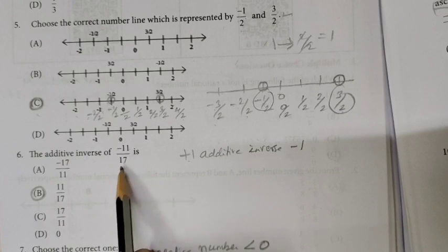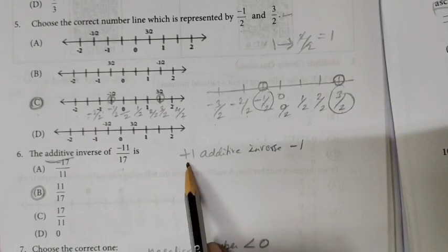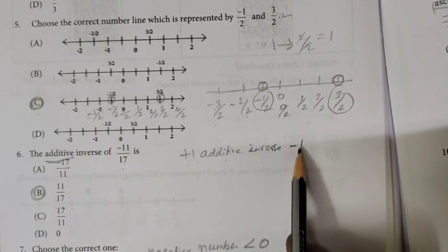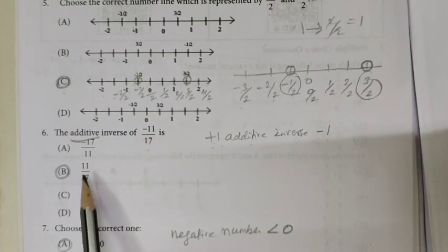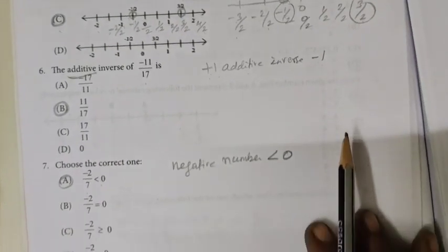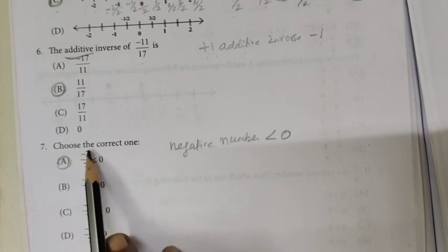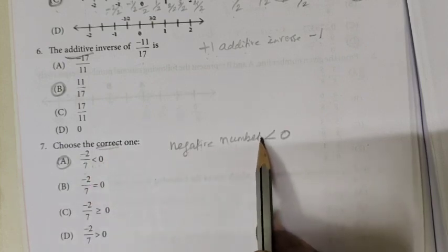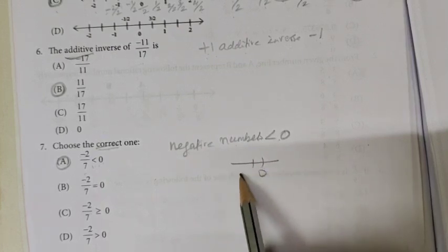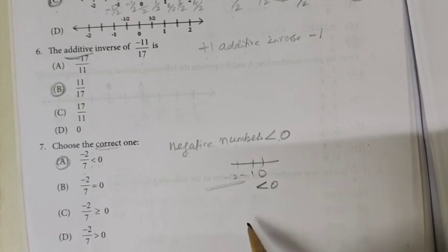Question 6: The additive inverse of minus 11/17. Additive inverse means changing the sign — plus becomes minus, minus becomes plus. So the additive inverse of minus 11/17 is plus 11/17. Question 7: Is minus 2/7 less than 0? All negative numbers are less than 0, so the first option is the correct one.